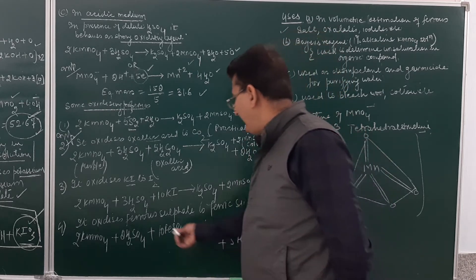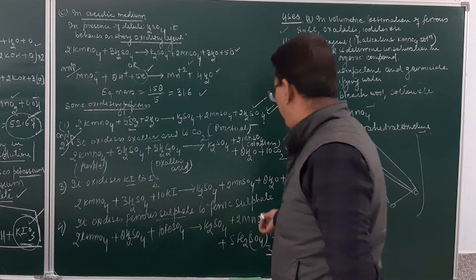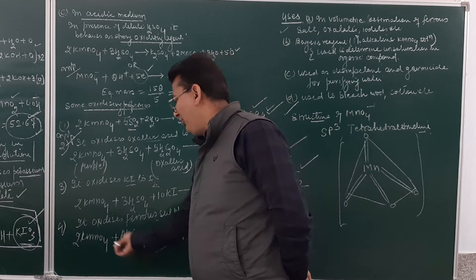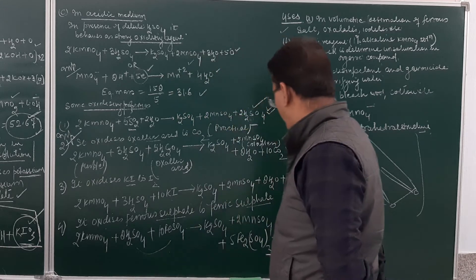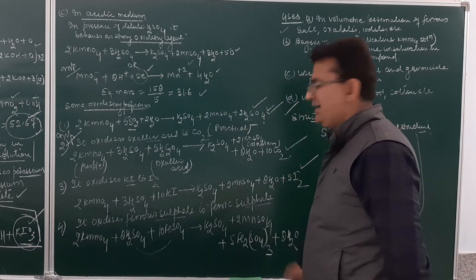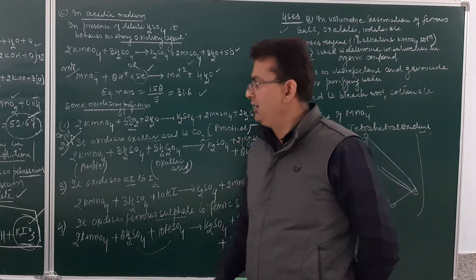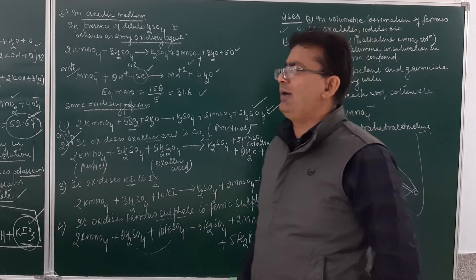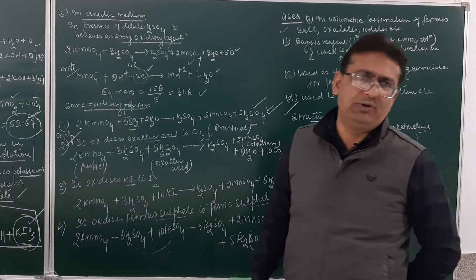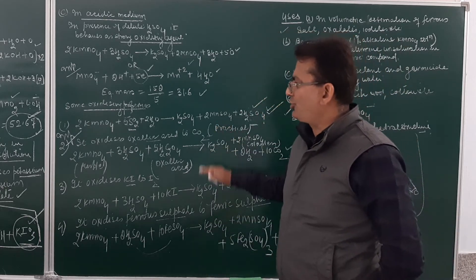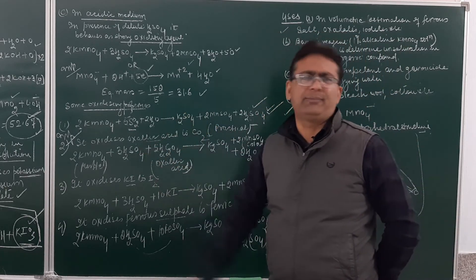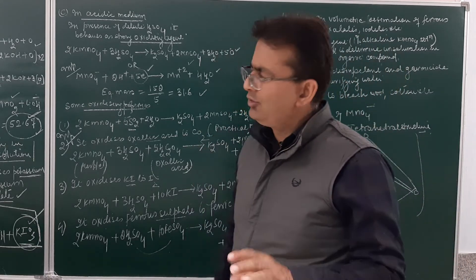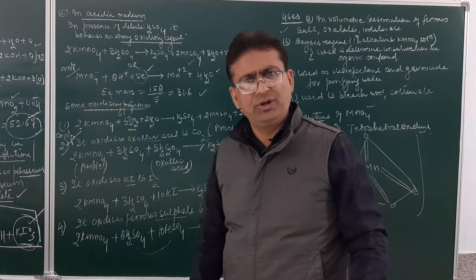It also oxidizes ferrous sulfate to ferric sulfate — acidified ferrous sulfate when reacted with KMnO4 will be oxidized to ferric sulfate. Students, note down these reactions; you have to learn them very thoroughly. Almost certainly a two-marks question in the board examination will come from this topic, and if you take KMnO4 and potassium dichromate together, a three-marks question is assured.